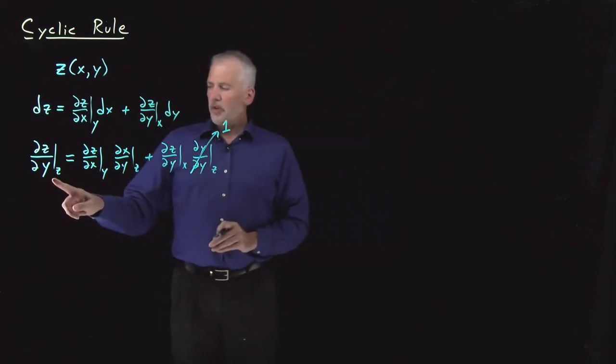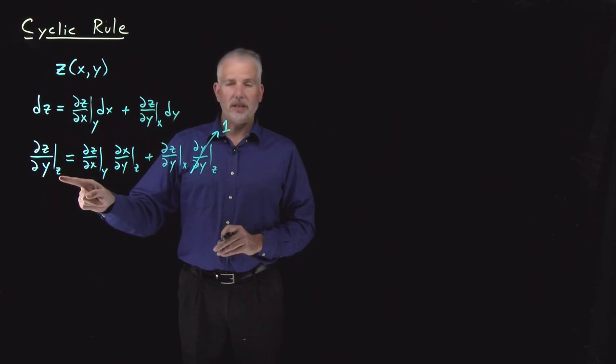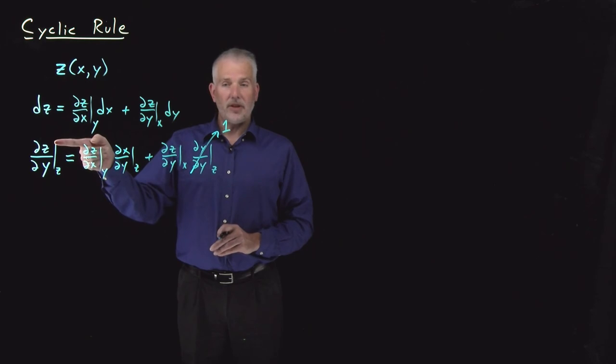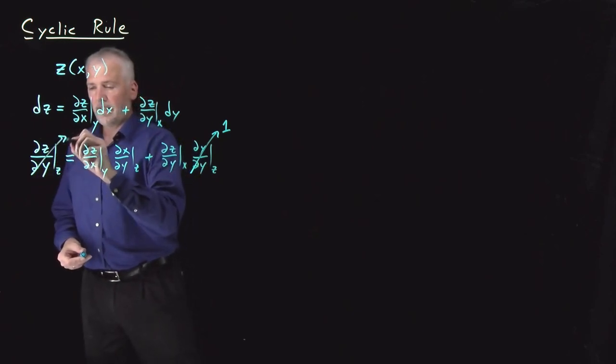The other one that seems a little odd is this one, ∂z/∂y at constant z. When I change y, how much does z change when we hold z constant? Well, we've just answered our own question. When we hold z constant, z is not allowed to change. So the change in z must be 0. ∂z/∂y when holding z constant, that's equal to 0.